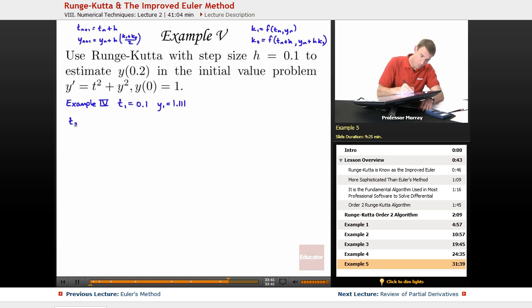So, our t2 is t1 plus h, so that's 0.2. And now, I'm going to find my k1 and k2.